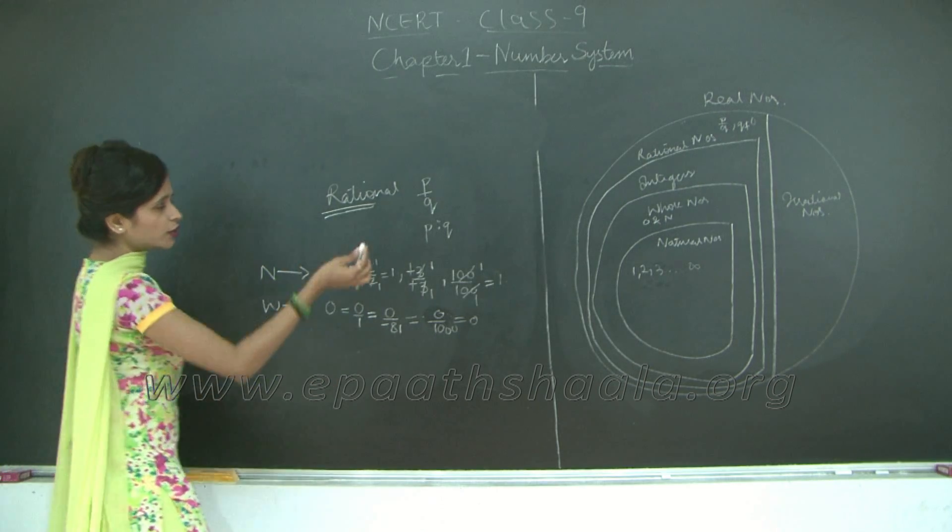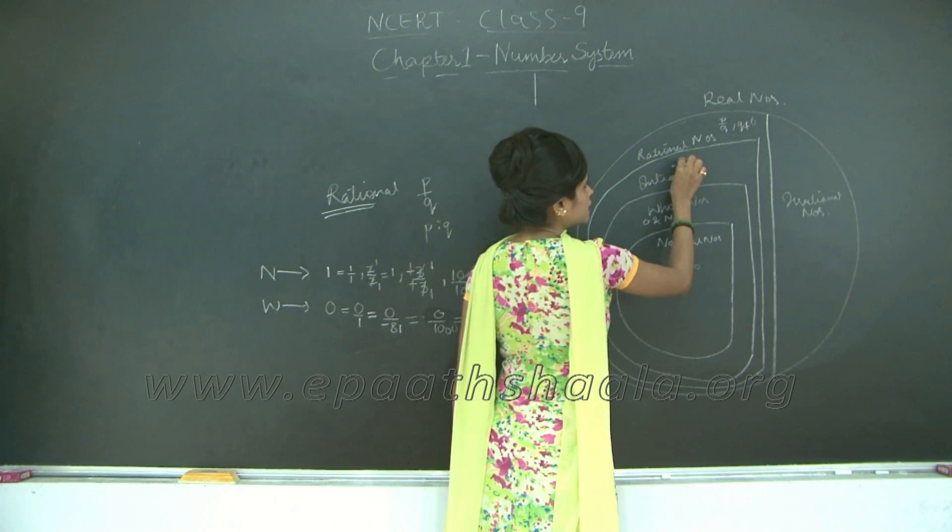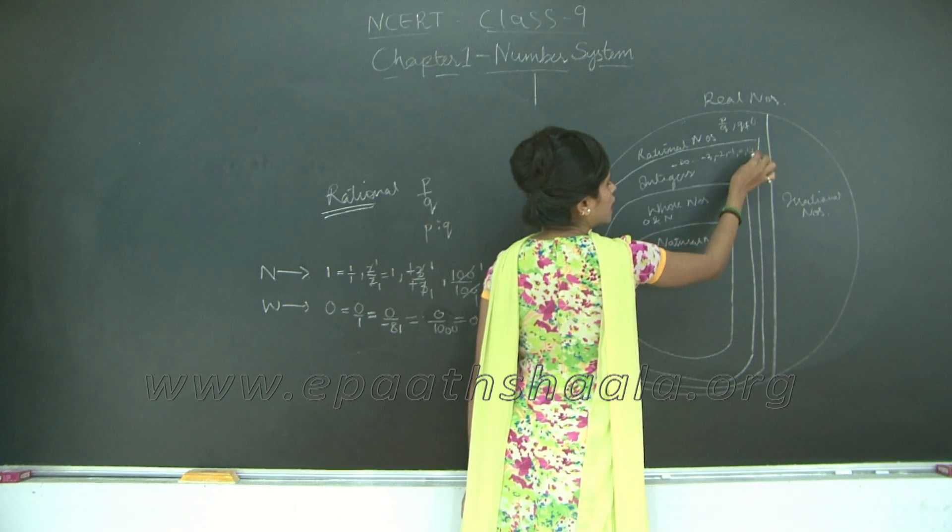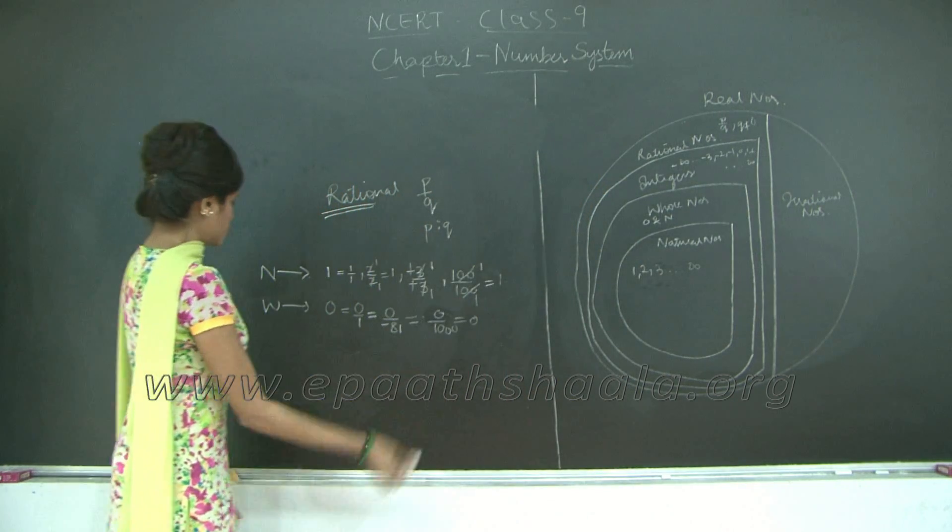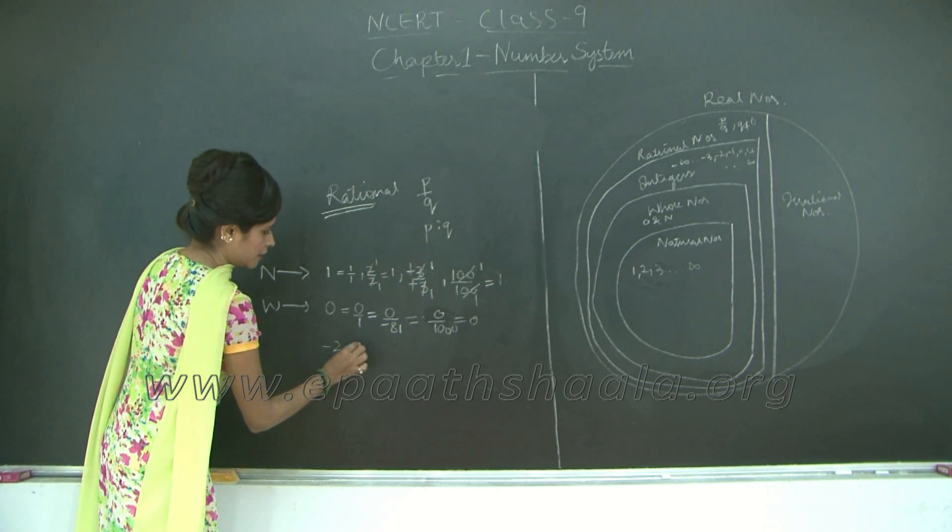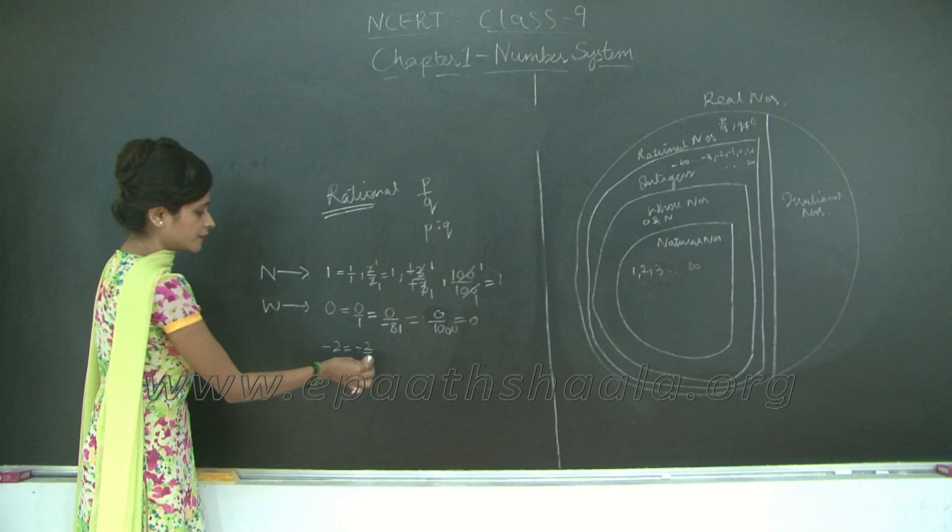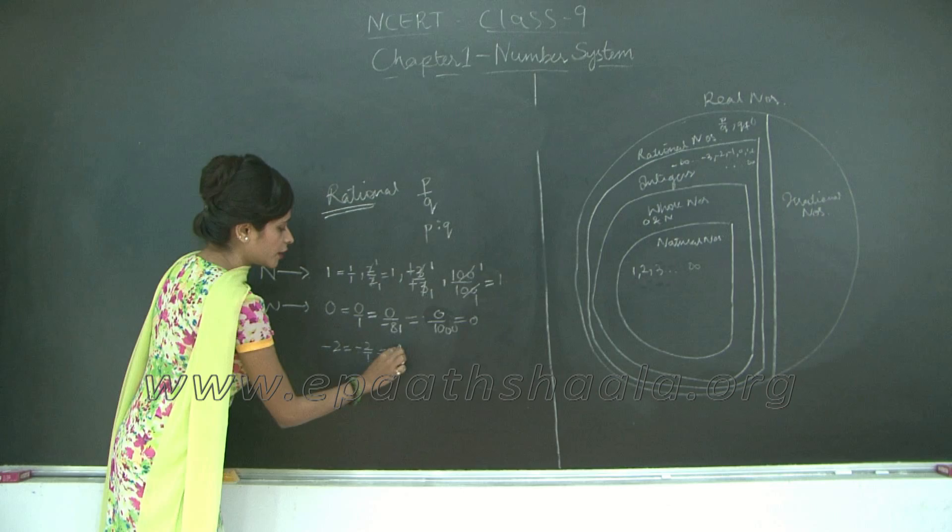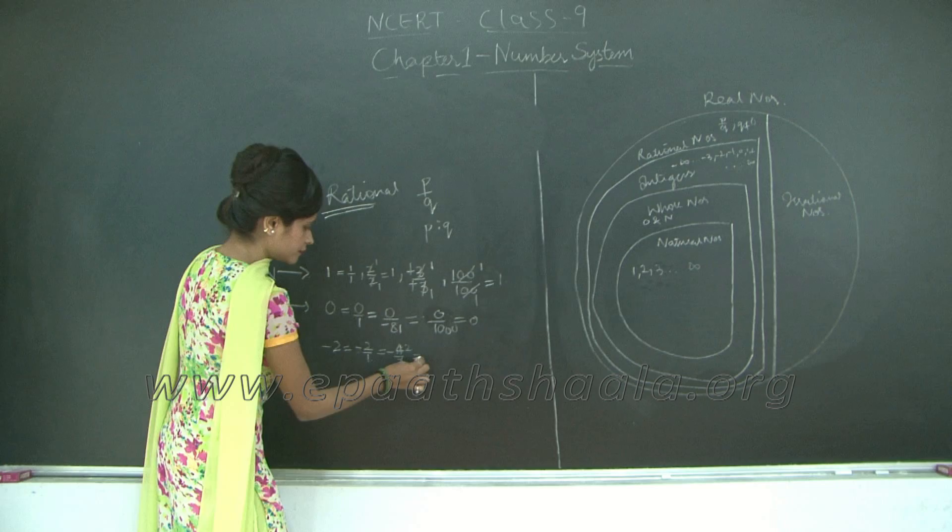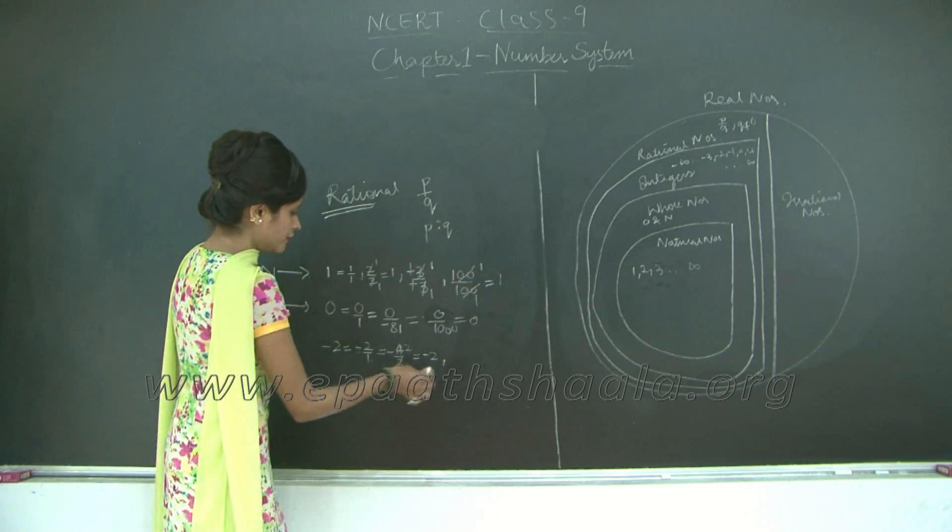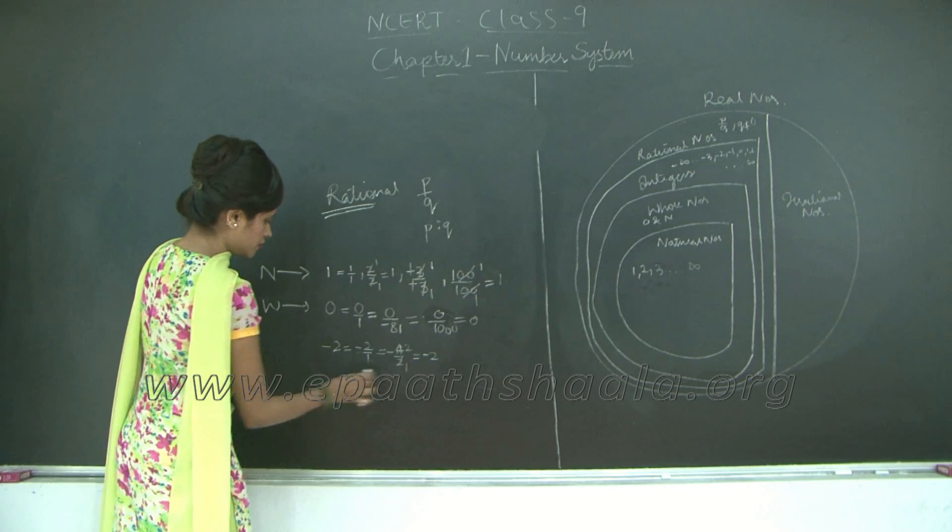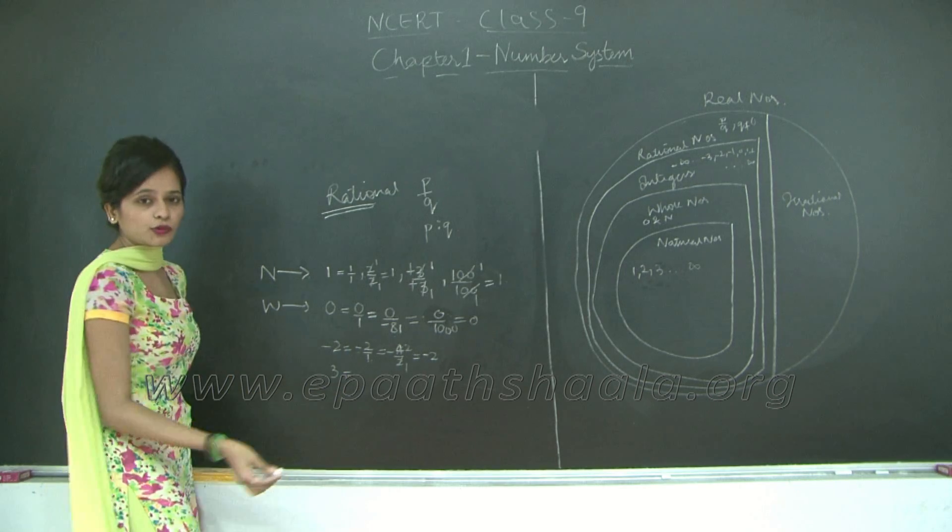Now let's take a look at integers. Integers are from minus infinity, minus 3, minus 2, minus 1, 0, 1, 2, up to infinity. Let's take a look at minus 2 for example. Minus 2 can be represented as minus 2 upon 1 which is p upon q and q is not equal to 0. This can also be represented as minus 4 upon 2. Let's cancel and check: 2 ones are 2, 2 twos are 4, so I get minus 2.